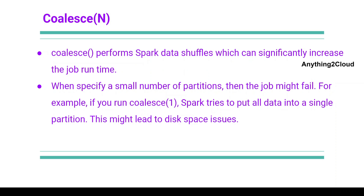Coalesce of n: the coalesce function performs a Spark data shuffle, which can significantly increase the job runtime. When we use coalesce of n it does the data shuffle and this might increase the job runtime, and when you specify a small number of partitions the job might fail. For example, if you run coalesce of one, Spark tries to put all data into a single partition, which might lead to disk space issues.